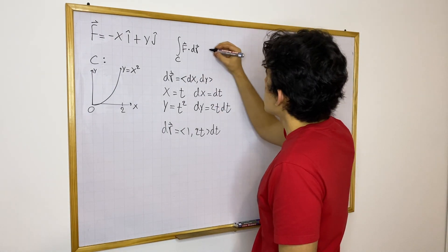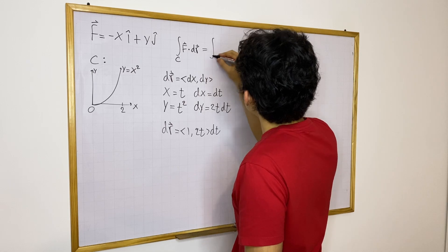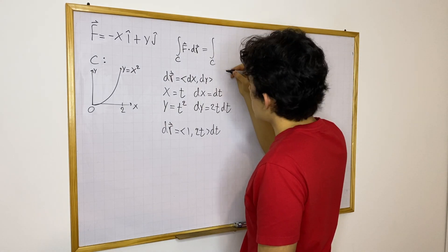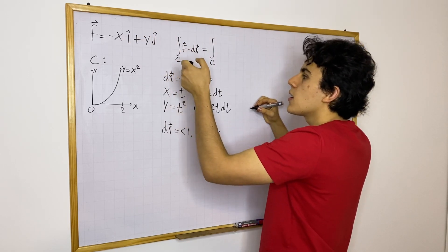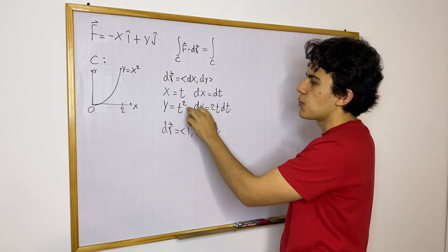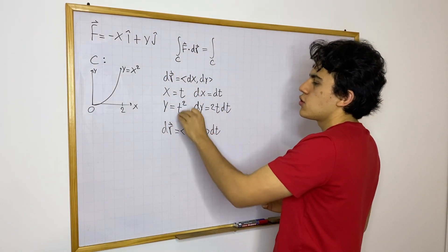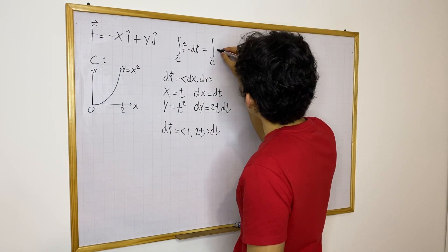And now f, well that's very nice and simple because we can rewrite it, we can rewrite f in terms of t, because f is in terms of x and y, and we already have x and y in terms of t. We arbitrarily chose this parameterization.